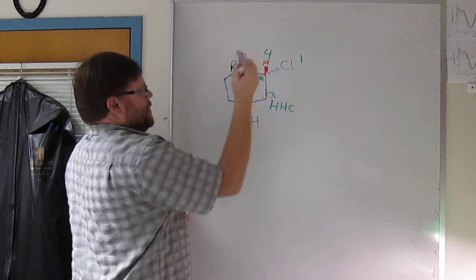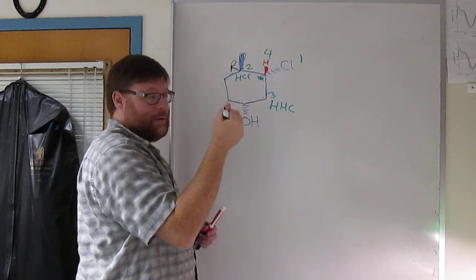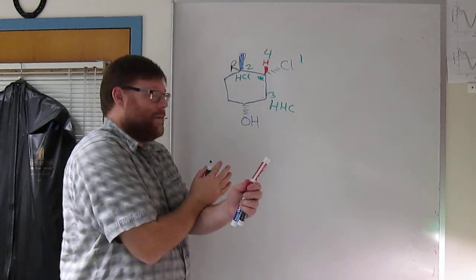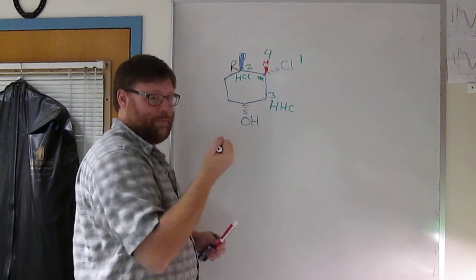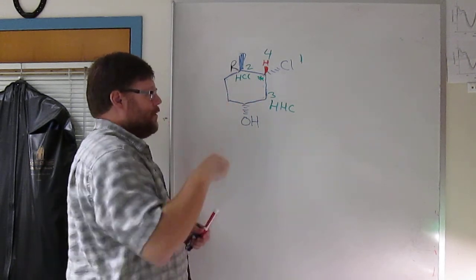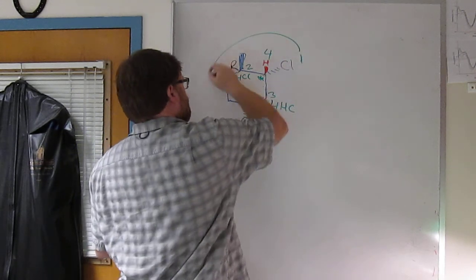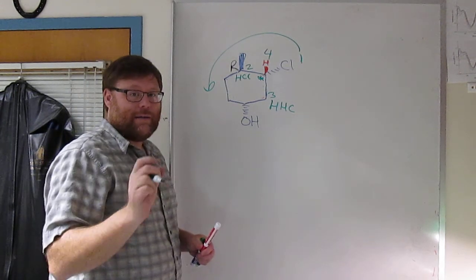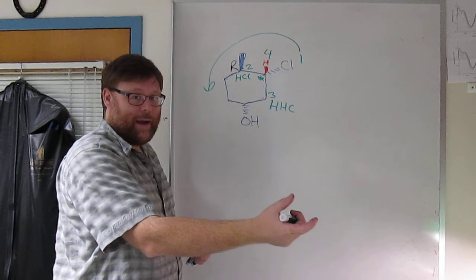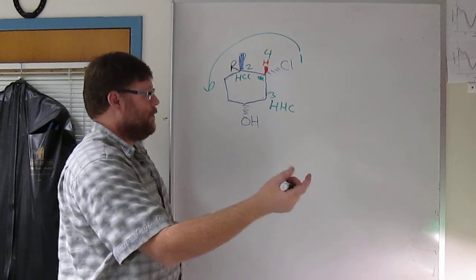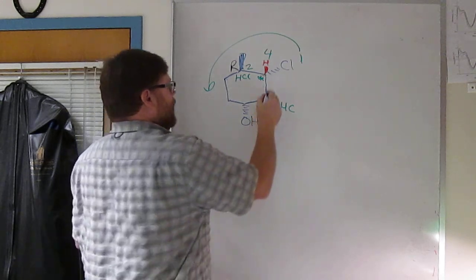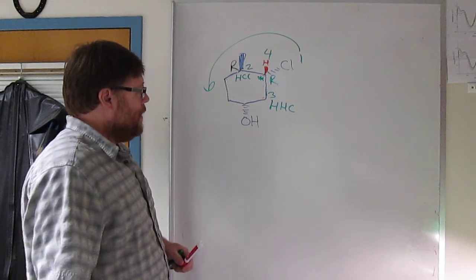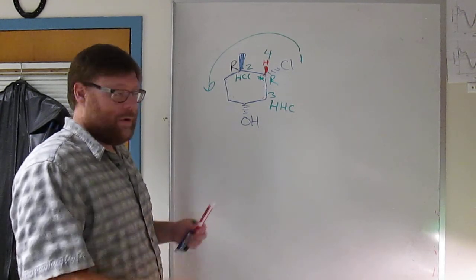Now, the H—the low priority group—is sticking out at you. You can try to turn the molecule around, but then you've got to keep everything the same as you turn it around. I find it easiest with the low group pointed out at you to take the circle and just take the reverse. The circle is one to two to three, it's counterclockwise. Counterclockwise, if you've set the molecule up with low priority group away, is S. But because of that, you have to take the reverse, so that means this would be R.